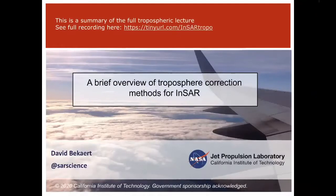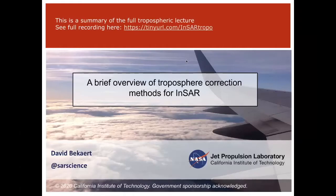Welcome everybody. We heard already in the previous lectures talking a little bit about atmospheric noise or propagation delay. Generally that's comprised of two components: propagation delays through the ionosphere, which Irish will talk about, and propagation delay in the lower part of the atmosphere, which is the troposphere. Both of them you could try to correct for, and potentially you could use that as input to your modeling efforts or to improve the uncertainty.